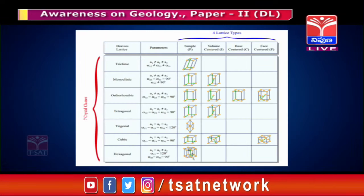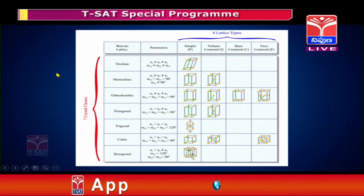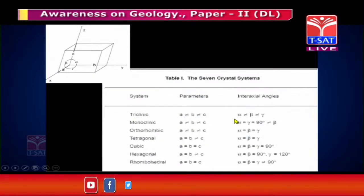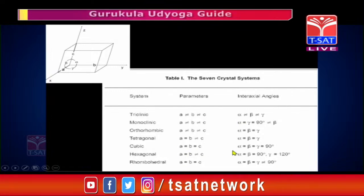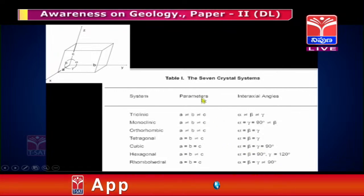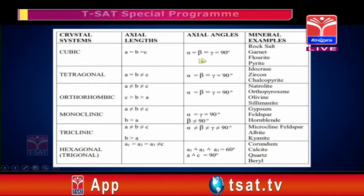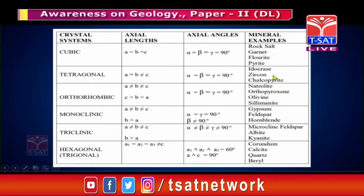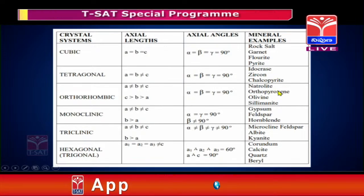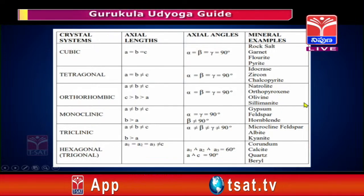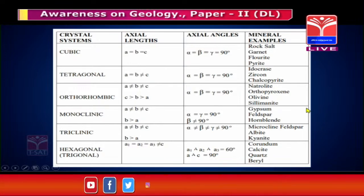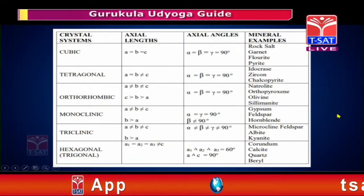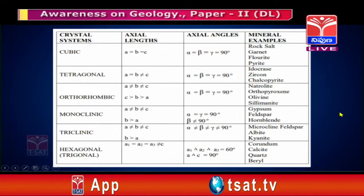Now, crystallography. Triclinic system: a ≠ b ≠ c, α ≠ β ≠ γ. Cubic system: a = b = c, α = β = γ = 90°. We have to remember the normal classes of each crystal system and their examples. Cubic: rock salt, garnet, fluorite, and pyrite. Tetragonal: zircon, which is very important. Orthorhombic: orthopyroxene, olivine, and sillimanite. Monoclinic: gypsum, feldspar, hornblende. Triclinic: albite and kyanite. Hexagonal: corundum, calcite, quartz, and beryl. We have to remember which mineral crystallizes in which system.